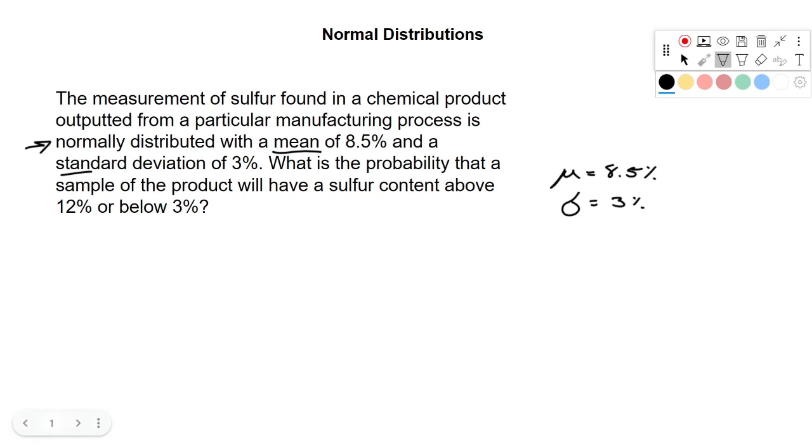And then of course we're going in a range here, and these are common problems you'll see. These are the most difficult of the normal distribution problems when you have a range. So it's asking what's above 12% or below 3%. So it's not what's between 3 and 12%, it's what's outside of those boundaries.